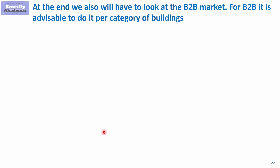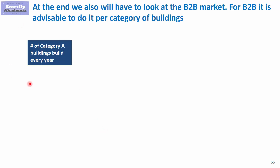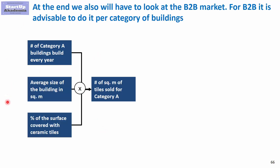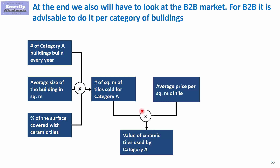The key difference for B2B is that we should go segment by segment, because the amount of ceramic tiles differs greatly — a stadium versus a library, for example. For each category, we take the number of buildings built per year, multiply by average size in square meters, then by the percentage of surface covered by ceramic tiles, then by price to get the value for that category.